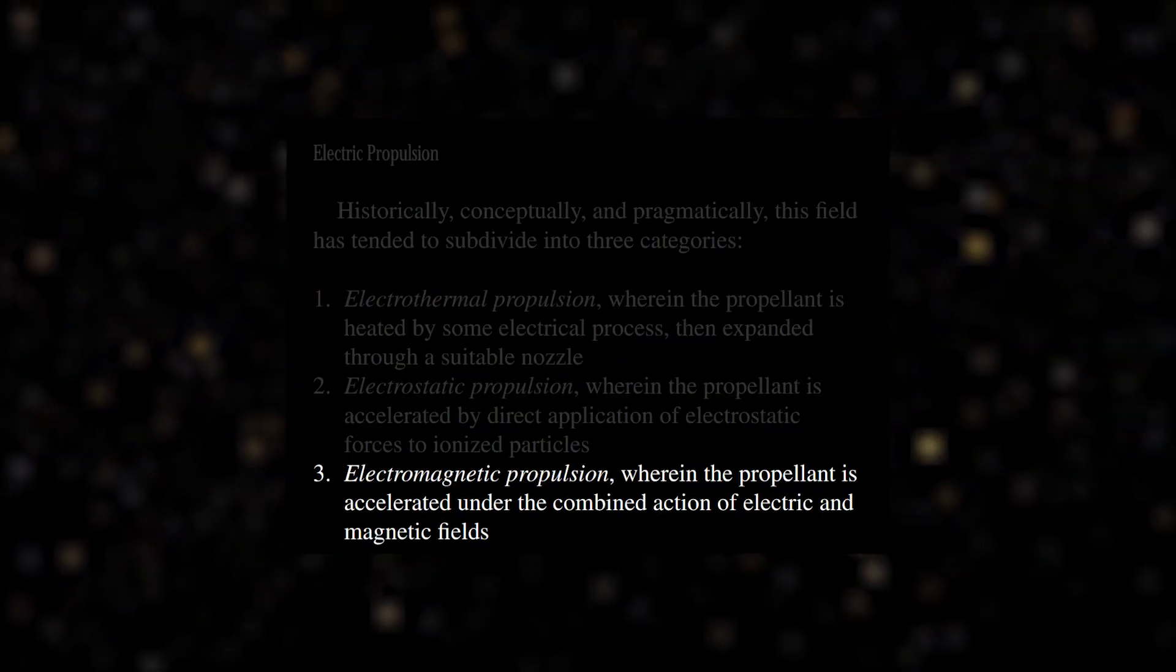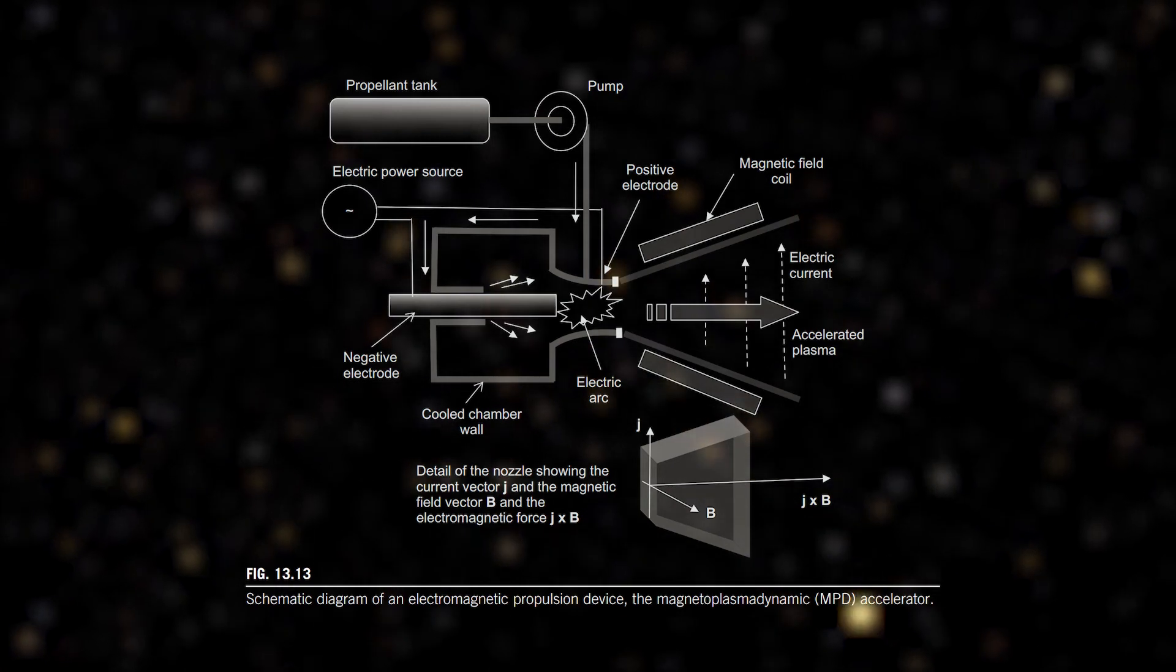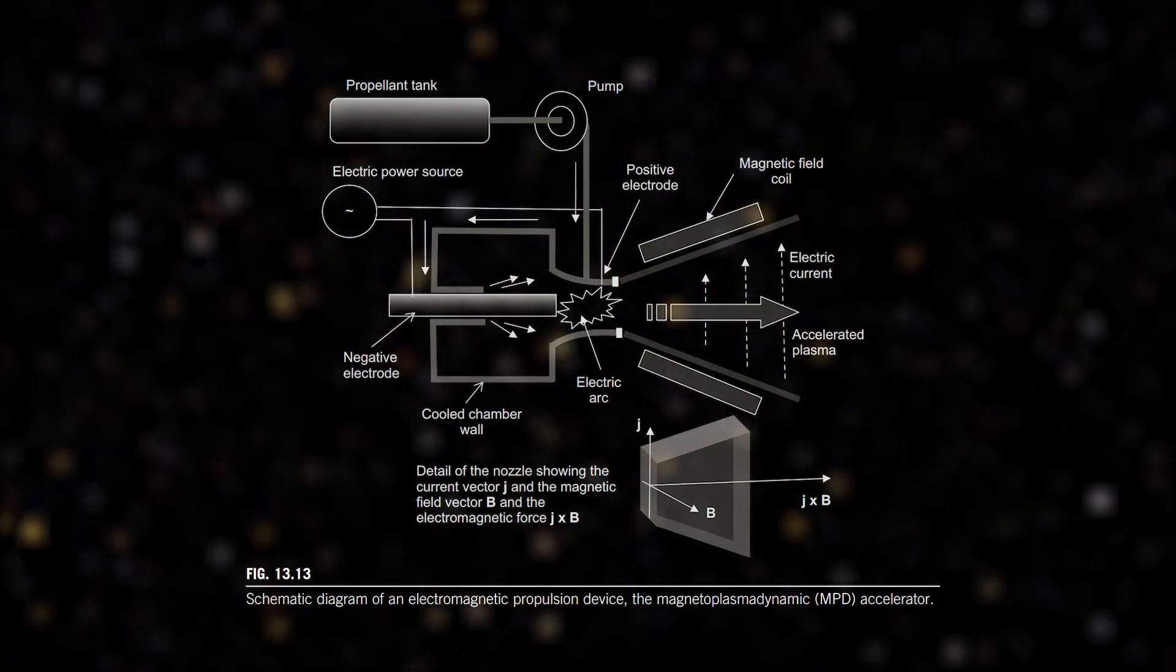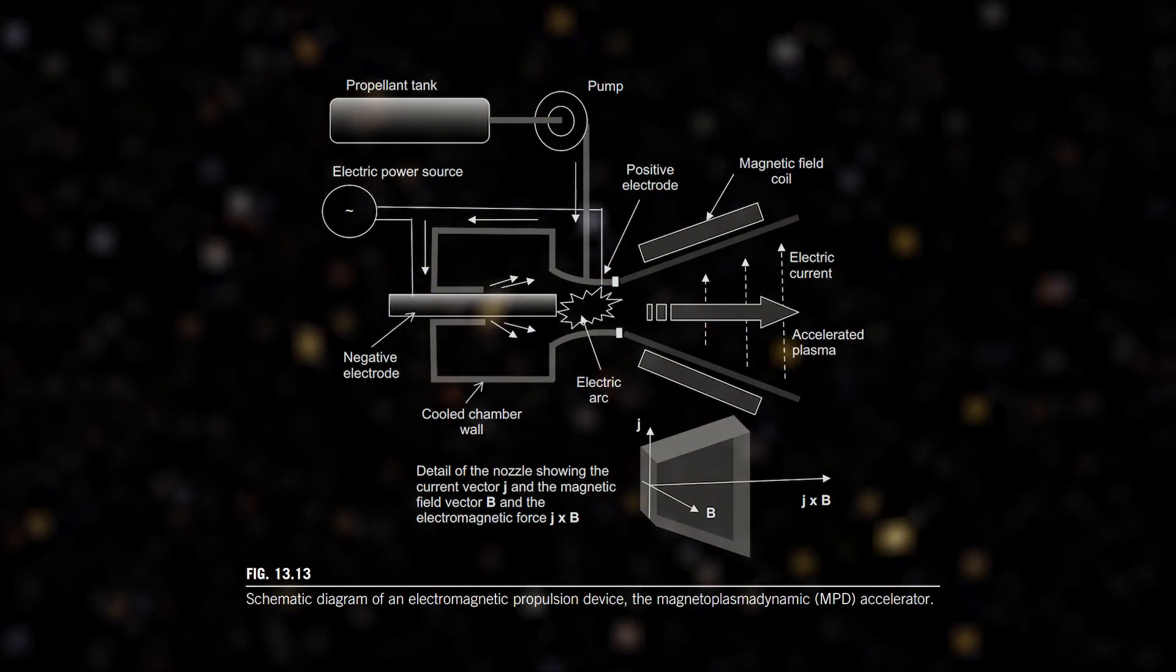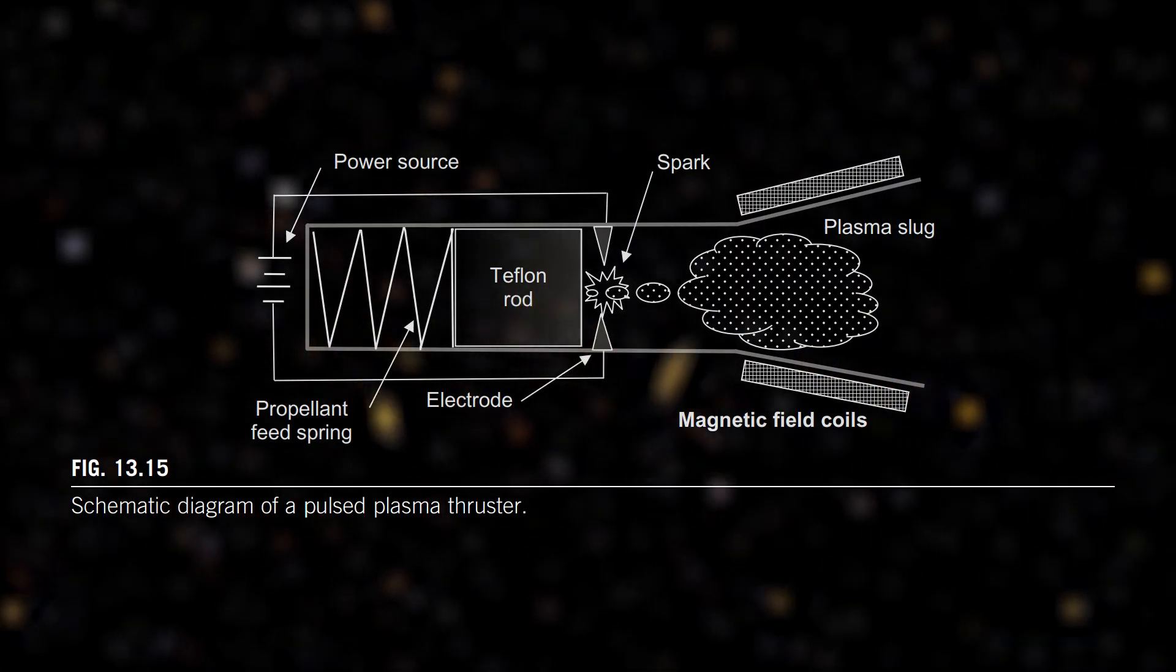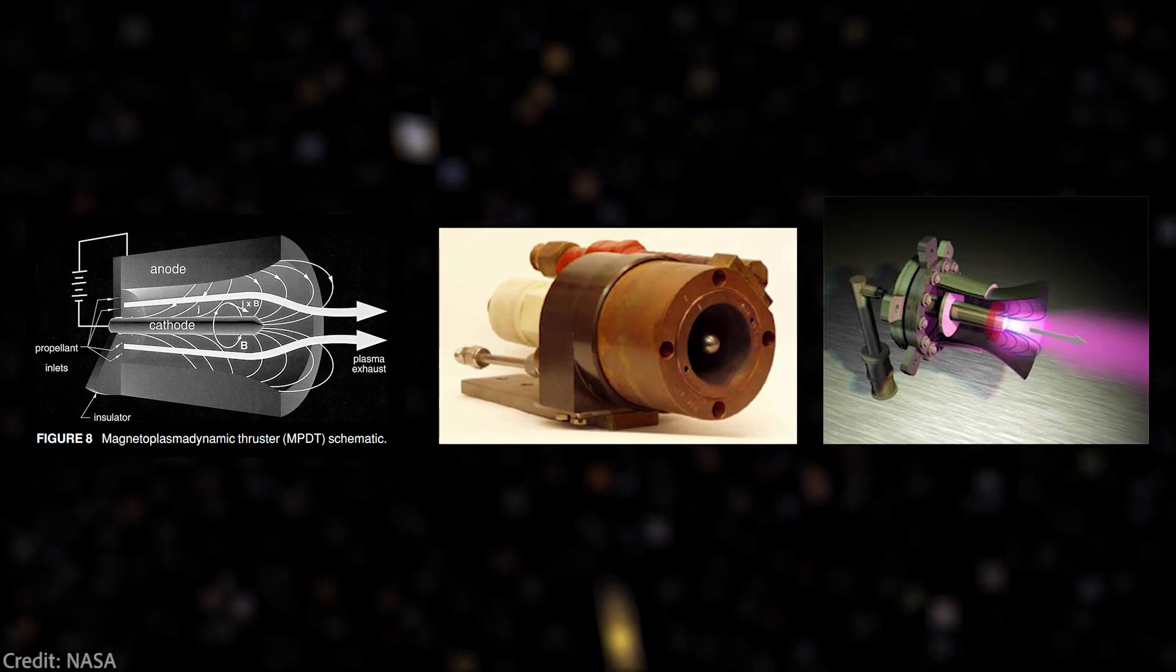In short, here electric and magnetic fields are used to accelerate gas. Here are some subtypes: pulsed plasma thrusters, magnetoplasma dynamic thrusters.